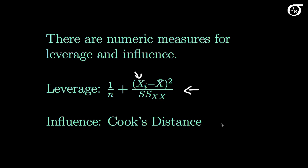For influence we have something called Cook's distance. There are some other measures as well. But Cook's distance provides a measure of how much the parameter estimates change when a point is removed from the calculations.